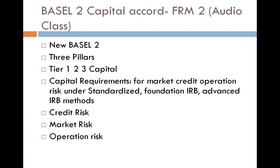To simplify, the entire system is divided into the capital — that is the Tier 1, Tier 2, and Tier 3 capital — and how to calculate those capital requirements.